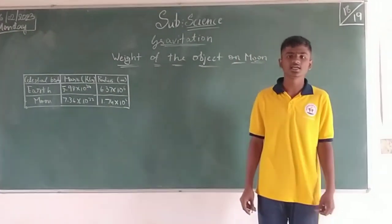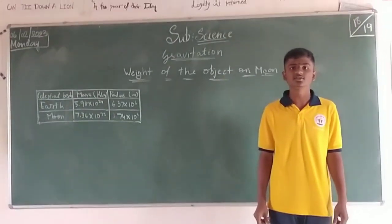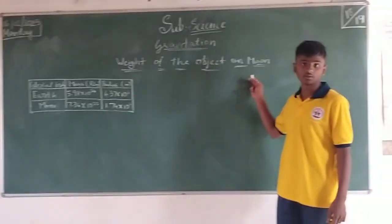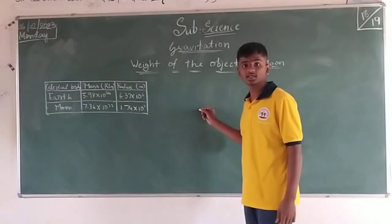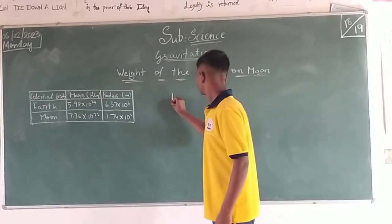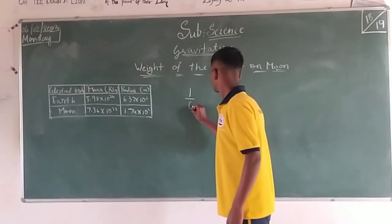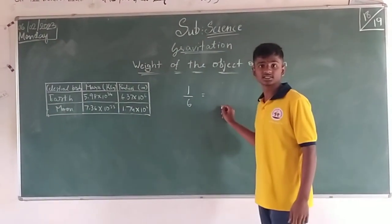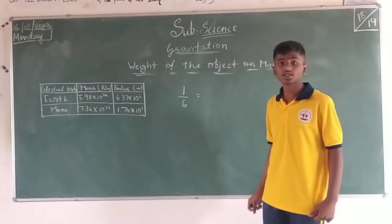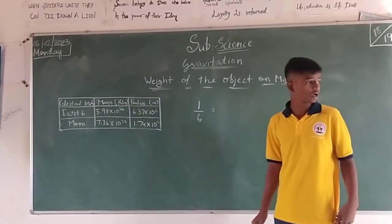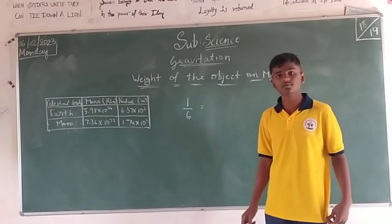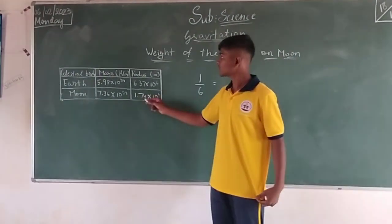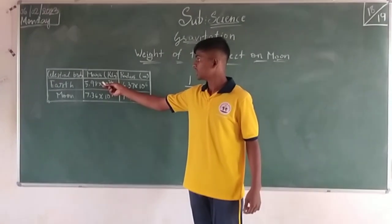I am going to explain the weight of the object on the moon. The formula given in the gravitation lesson is 1 by 6, meaning the weight of the object on earth divided by 6. The object on the moon weighs 1 sixth of the weight on earth.